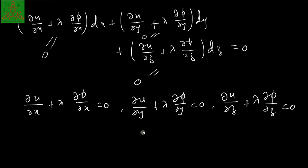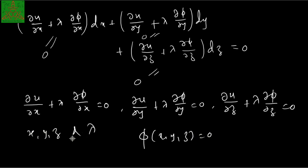These three equations together with phi(x, y, z) = 0 will determine the values of x, y, z and the value of lambda, which gives you the stationary value for this function. This is how the Lagrange multiplier method works. Let us see what the working rule is to find out the stationary value for this function.